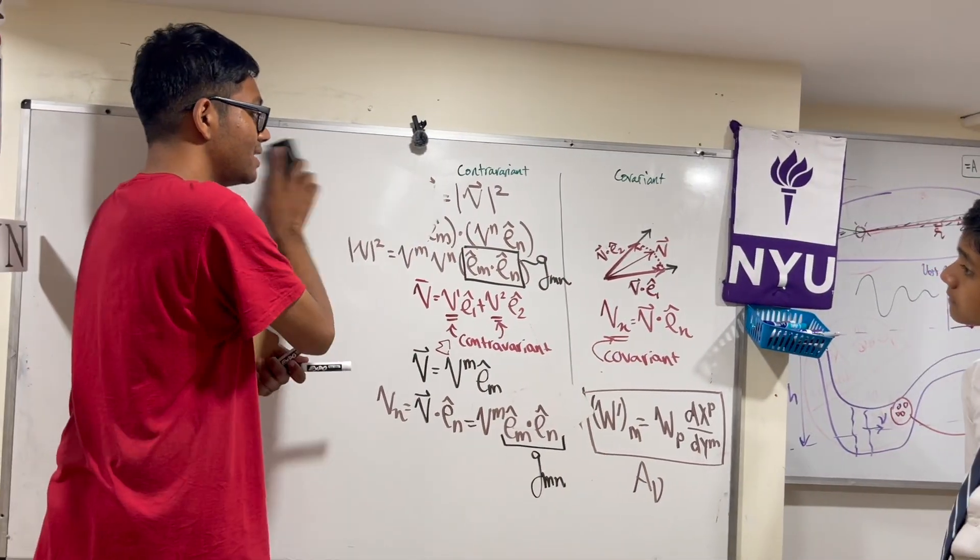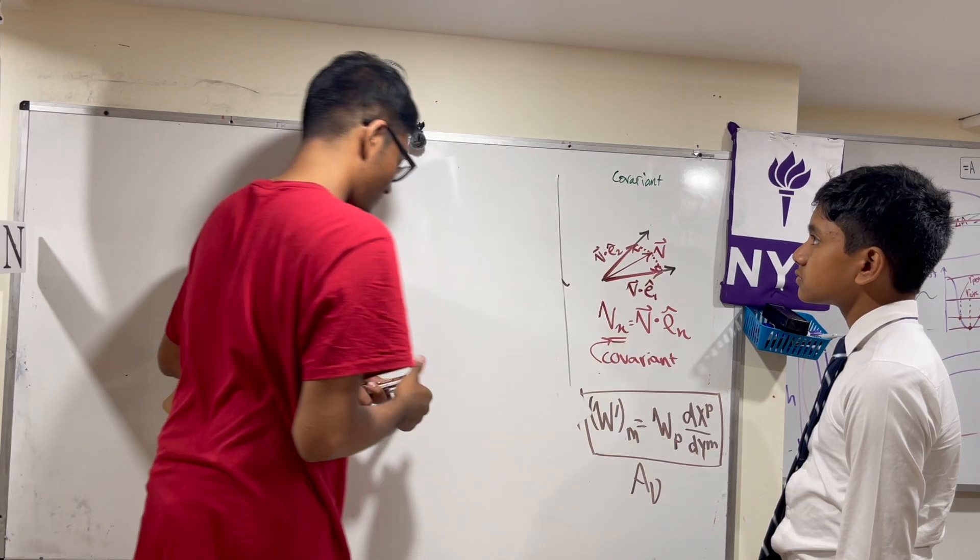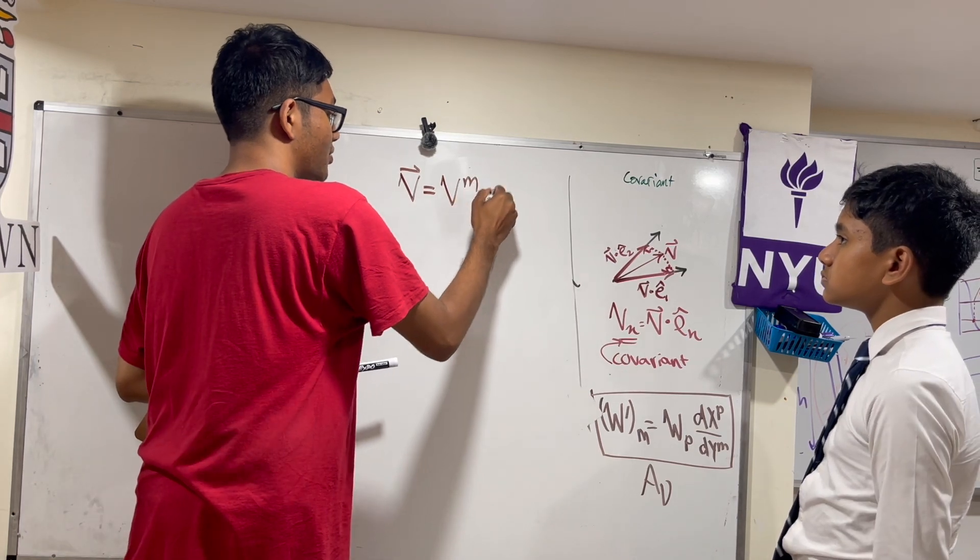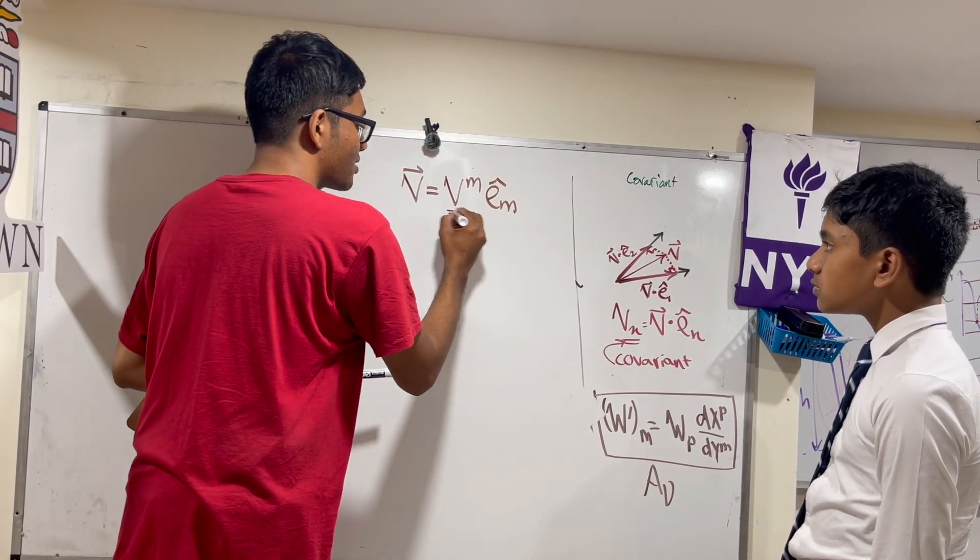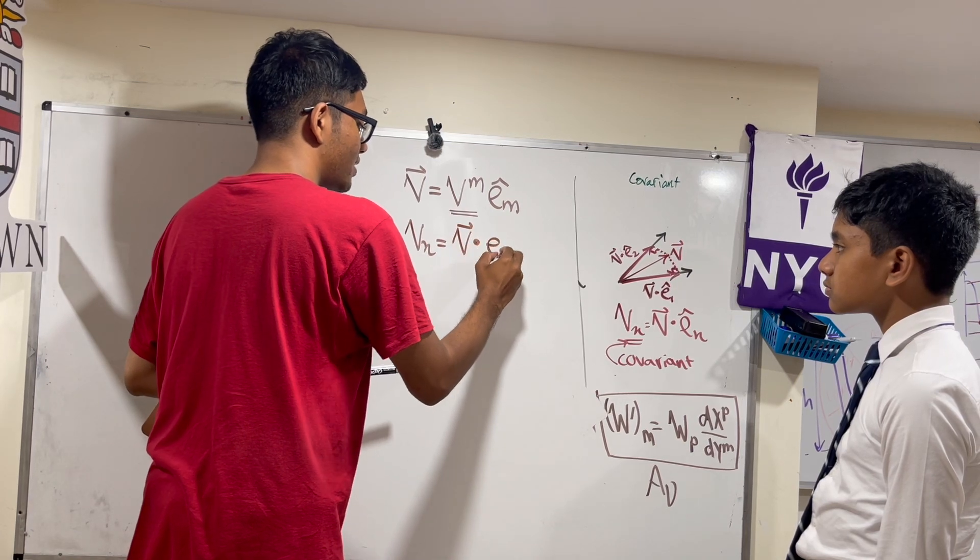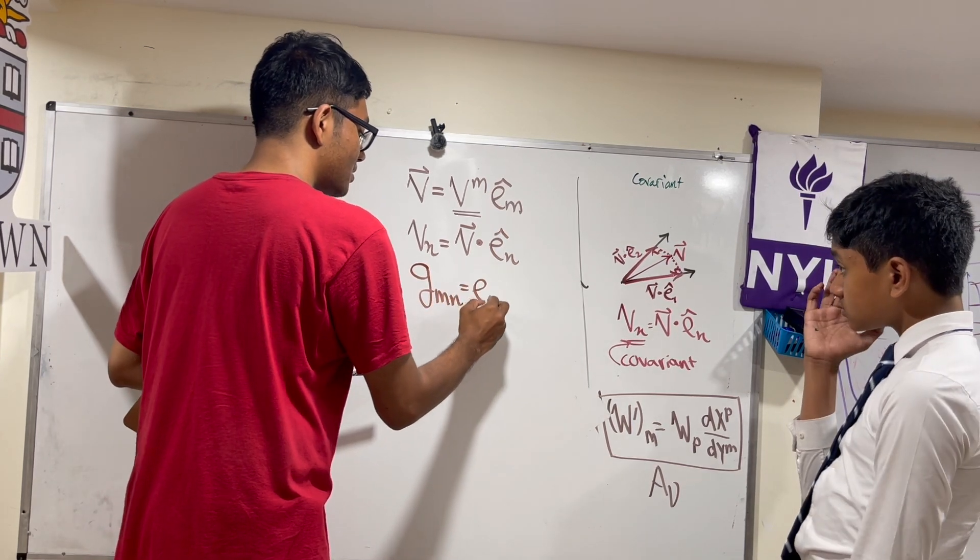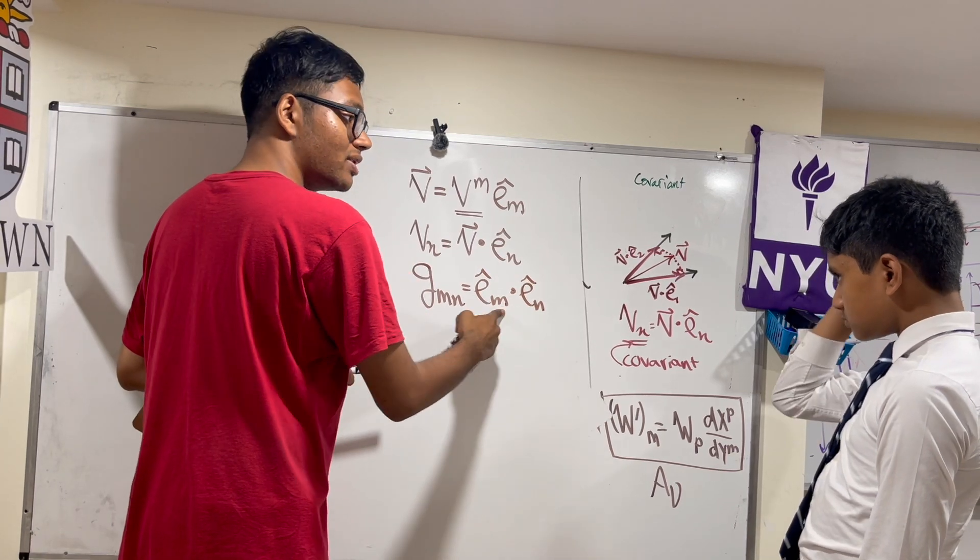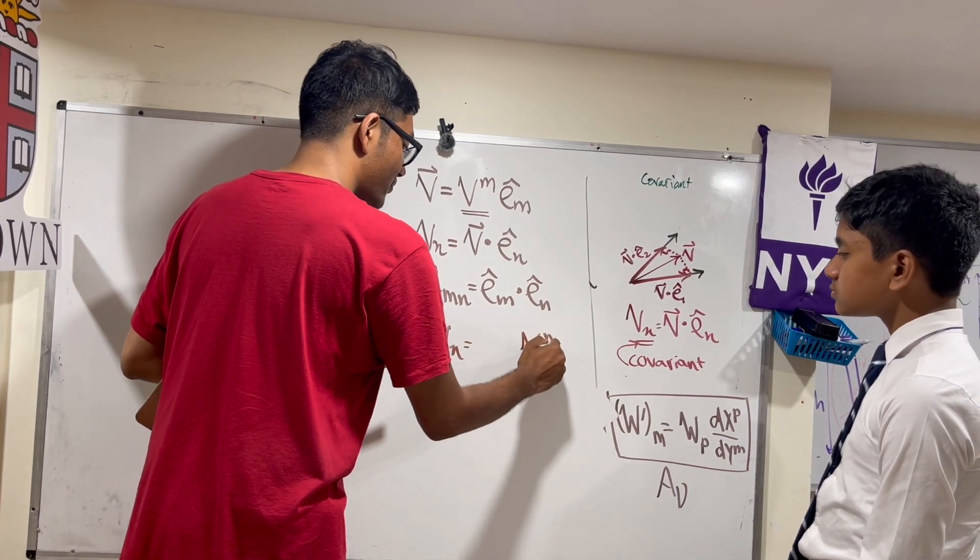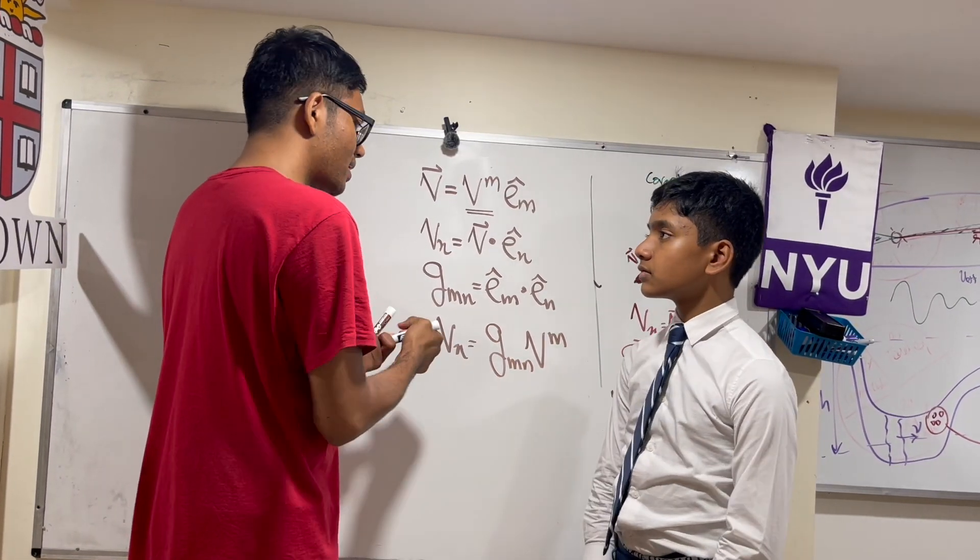So, to summarize, the four big ideas that we talked about today, the four big relations are as follows. The first big relation is that a vector v can be written in terms of its contravariant components. These are the contravariant components of the vector v. But we also define the covariant components as the dot product of the vector v with the nth basis vector. And then we also saw how the metric tensor pops out as the dot product of two different basis vectors. And finally, we saw the connection between covariant and contravariant vectors in terms of the metric tensor. But why is this true?